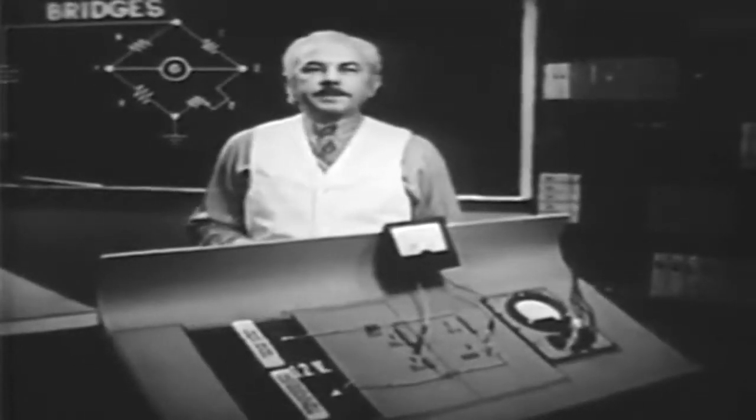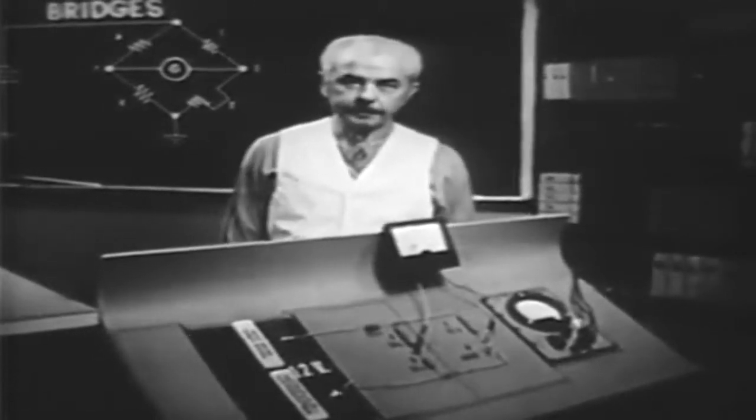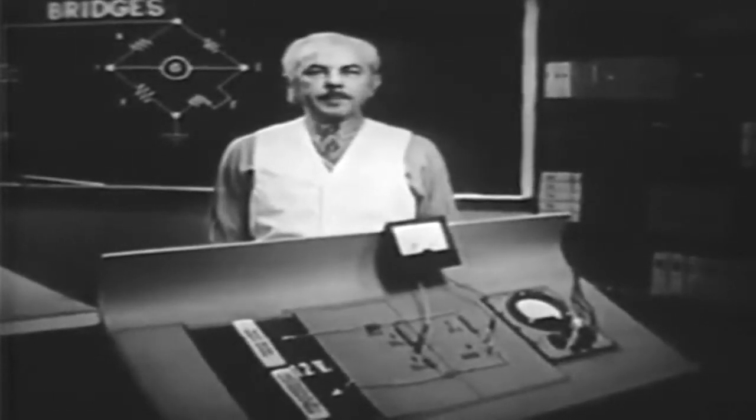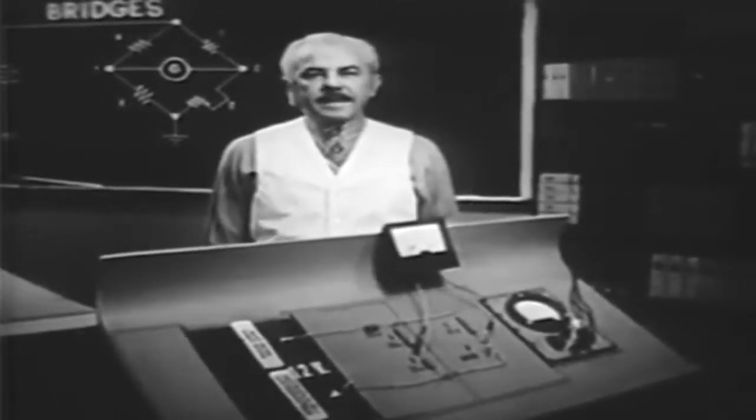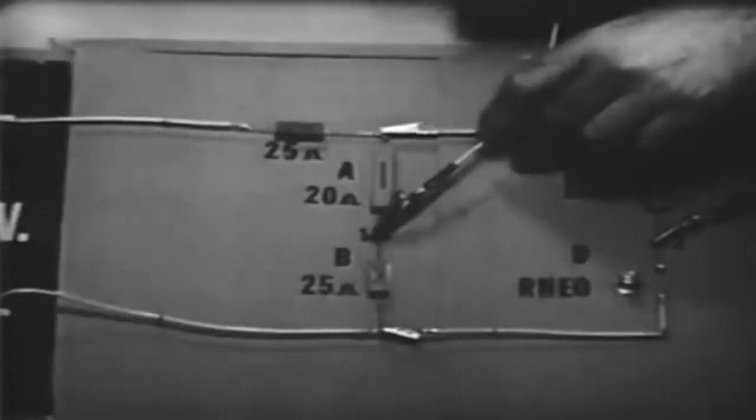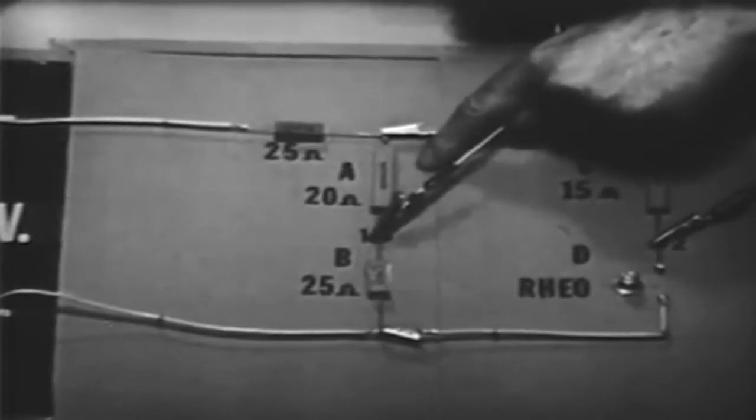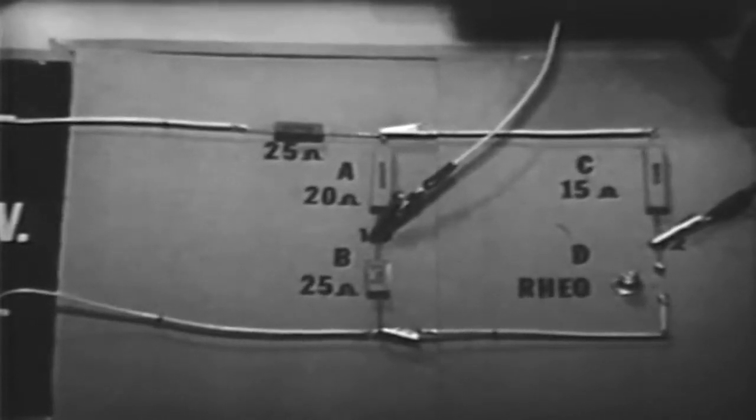One main purpose of such a circuit is to measure precise values of resistance. With a resistive bridge circuit, we can measure resistance values that are accurate to one-tenth of one percent. Let's examine the circuit again to see how this is possible.